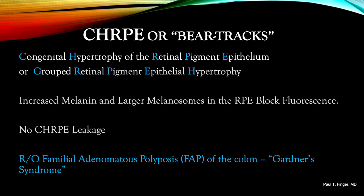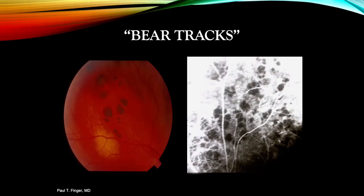Now let's apply our knowledge to the congenital form — CHIRPY, or grouped retinal pigment epithelial hypertrophy — which contains increased melanin and larger melanosomes that block fluorescence. CHIRPY lesions do not leak, do not grow, and are associated with familial adenomatous polyposis of the colon, also called Gardner syndrome. On the left, you see a fundus photograph of CHIRPY: note the edges lack a halo, there are no areas of internal atrophy, and most importantly they look like bear tracks. There is no retinal vascular leakage and no orange pigment lipofuscin. Fluorescein angiography reveals blockage of choroidal fluorescence that persists through the entire duration of the study.